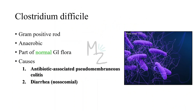Clostridium difficile is a gram-positive rod and an anaerobic bacterium, meaning it can live in the absence of or in less oxygen. It is a part of the normal GI flora of some human beings, not all. It is responsible for causing two major diseases: antibiotic-associated pseudomembranous colitis and nosocomial diarrhea.